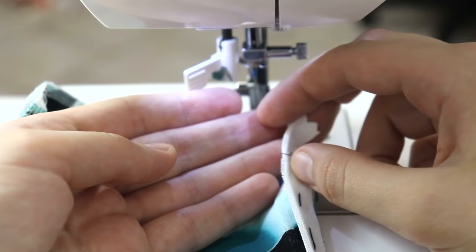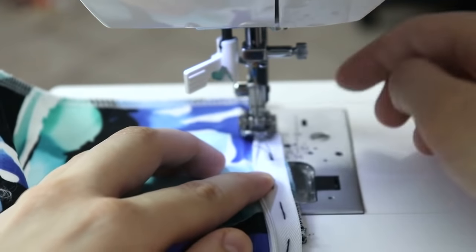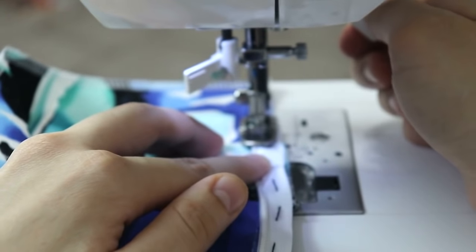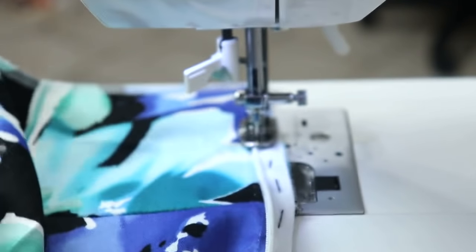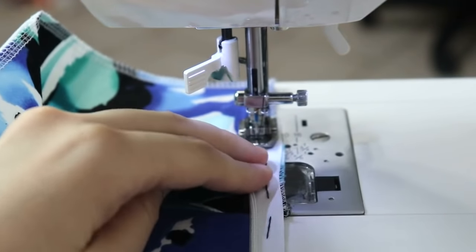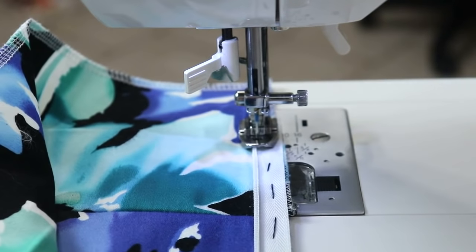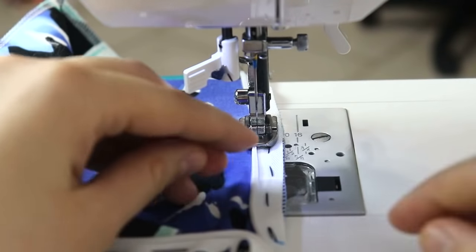Now make sure that the seam allowance and the actual zipper are facing in one direction and the skirt body is facing in the other direction. So you're only sewing through the zipper and through the seam allowance. And then start stitching. Go nice and slow.